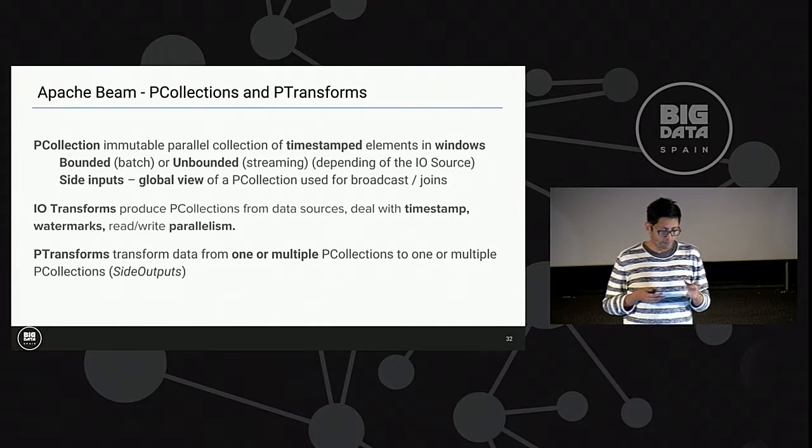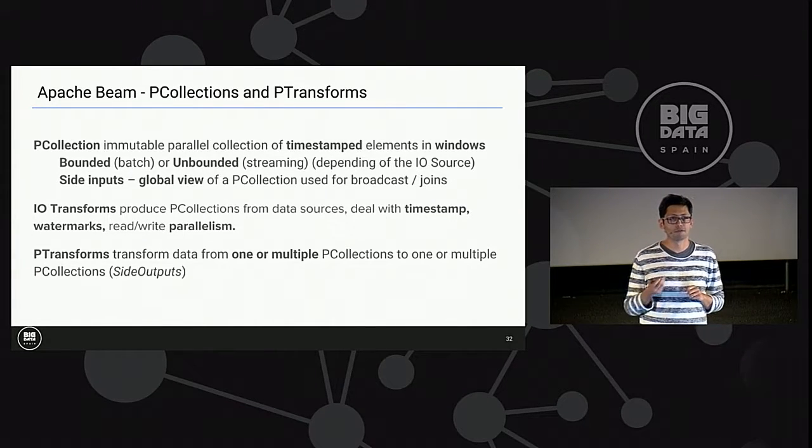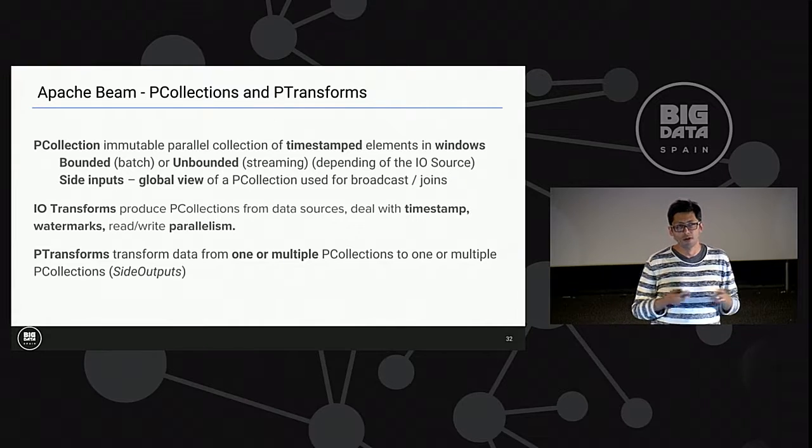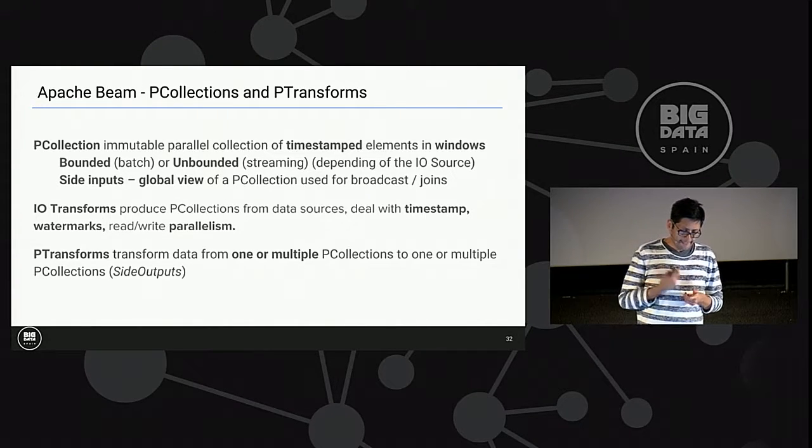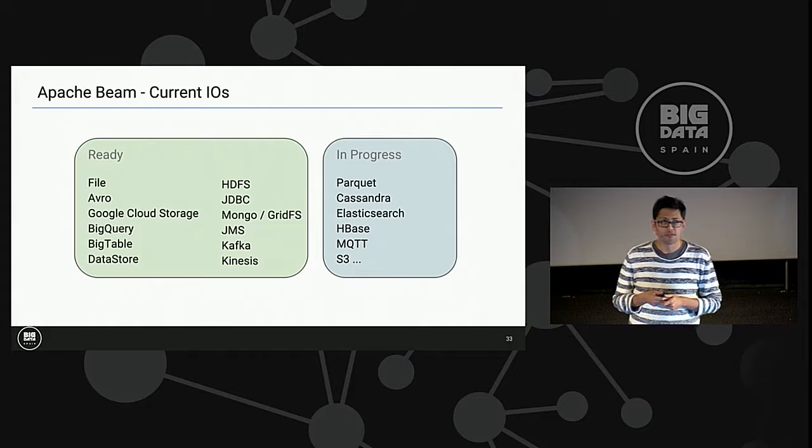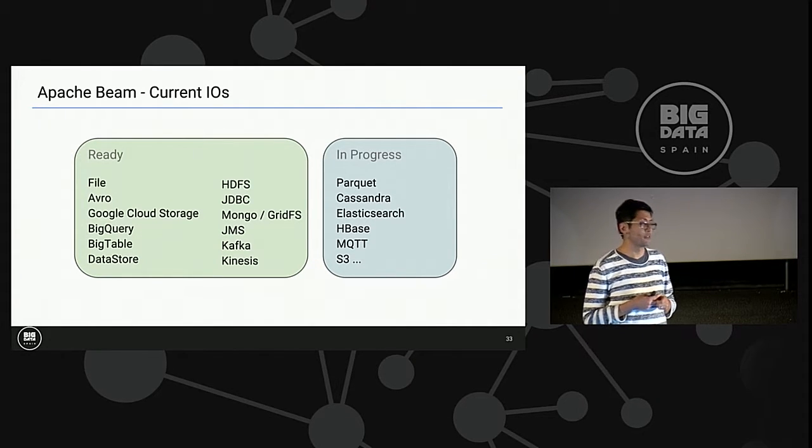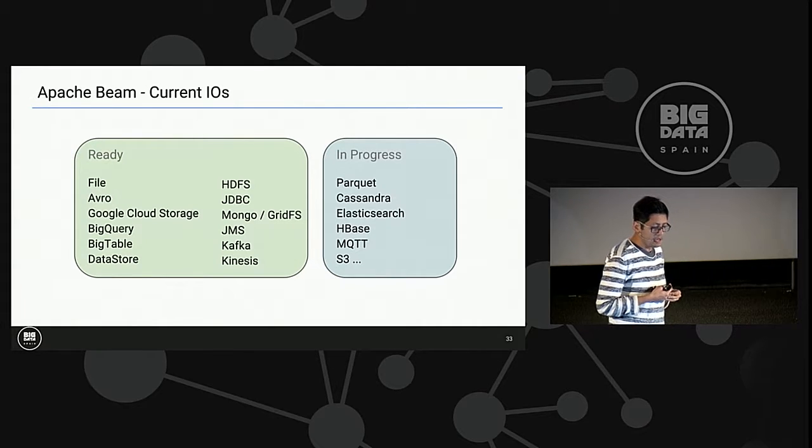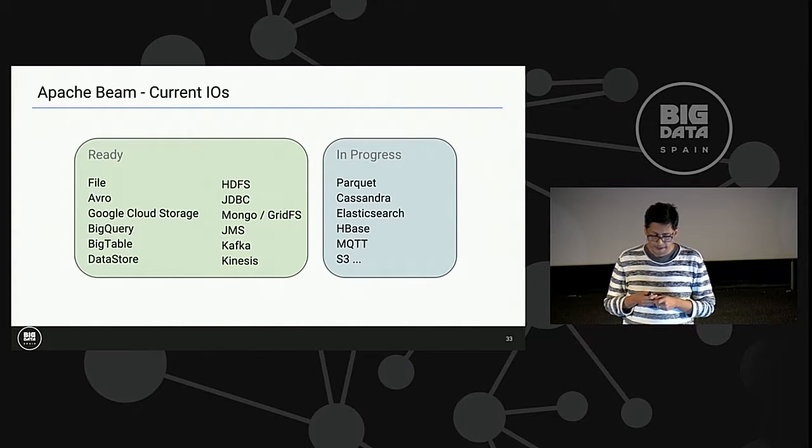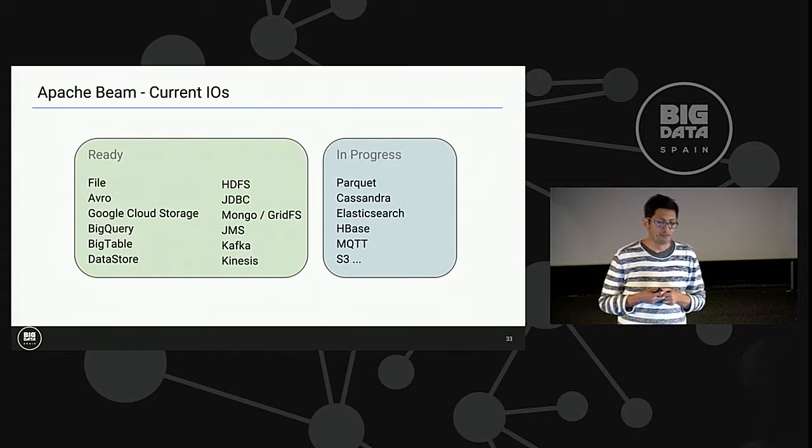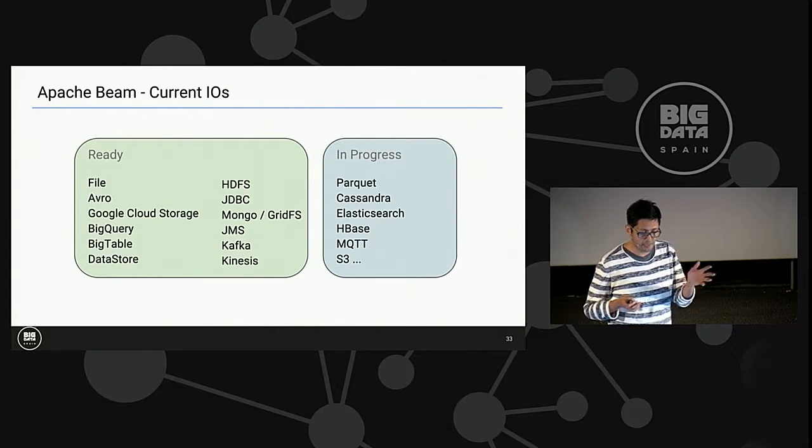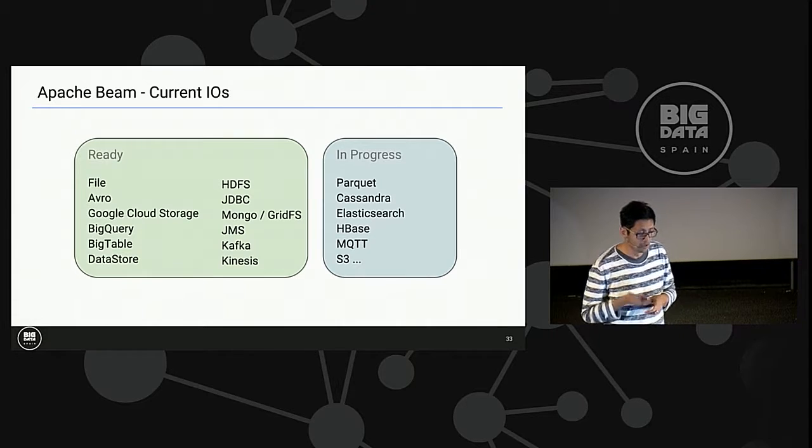There's this transformation. This is the current list of IOs that we have. We have covered all the Google ones because they contributed those, and we are slowly growing. I think at the end of the year we are going to have the full slide. This is what is in progress also. And it covers most of the most important data stores that exist, but this is open source, this is open. If you are an expert on Redis or something like that, you can come and contribute. We will be super happy to have you.